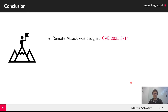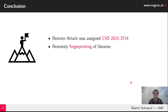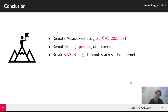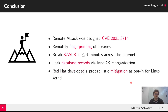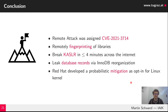Concluding this talk: we demonstrated a new scope for a deduplication attack — a completely remote one — and the attack was assigned a CVE. We were able to remotely fingerprint libraries, break KASLR, and leak database records using target alignment changes. In addition, Red Hat developed a probabilistic mitigation as an opt-in, similar to the VUsion patch we saw.